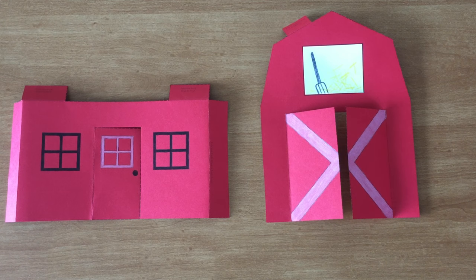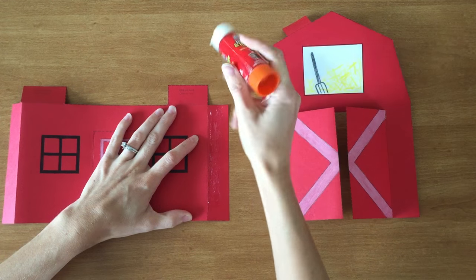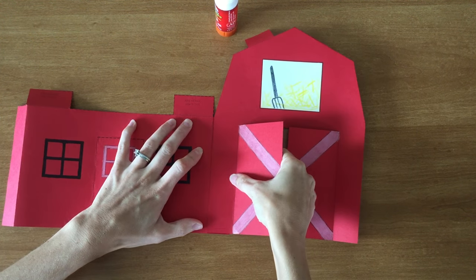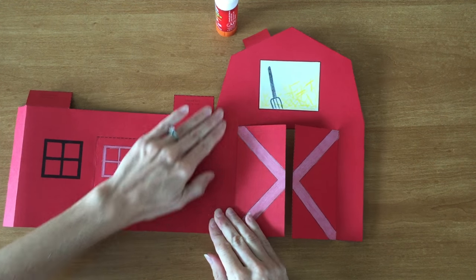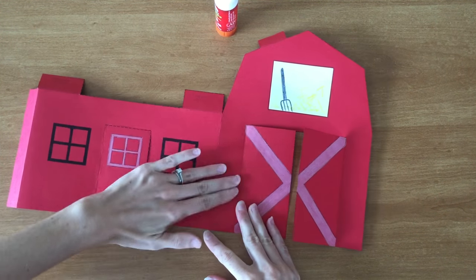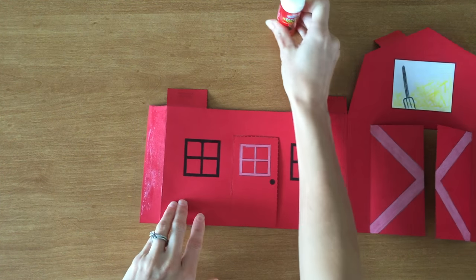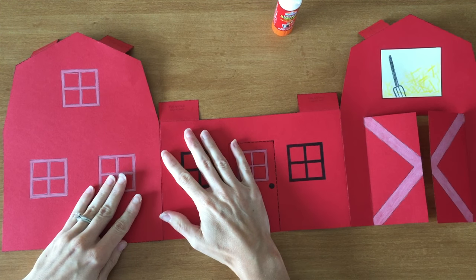It's time to assemble your barn. Start by putting glue on the tabs that are on the side pieces of the barn and then attaching those pieces to the front and the back of your barn. Be sure to press down securely so that you know all your pieces will stay together when you get it standing up.